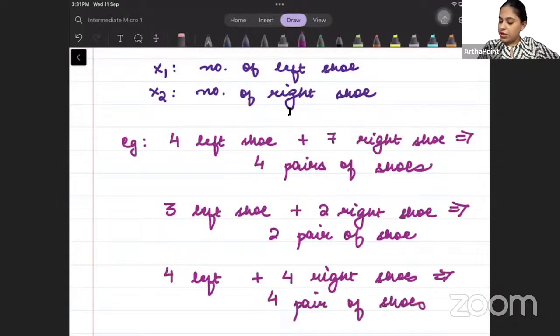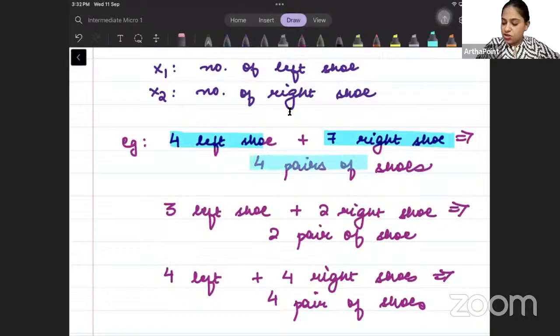Do you notice that always the number of pairs of shoes are minimum? When 4 left and 7 right, 4 or 7 ka minimum kya hai? 4 is less than 7. So, 4 pairs ban pahe. Extra 3 right shoes were of no use.